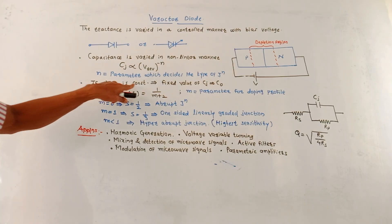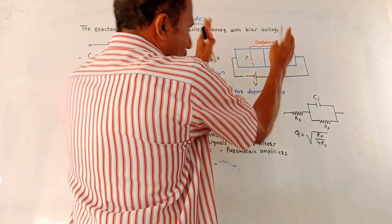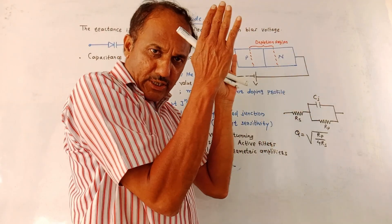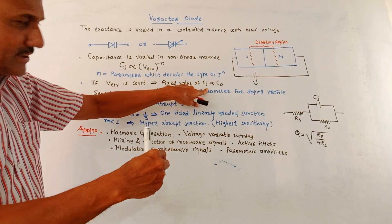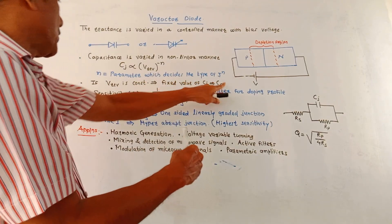If reverse bias is kept constant, then value of capacitance will not be changed. It is kept constant. So, in that case, it gives fixed value of junction capacitance, which is denoted by C0.